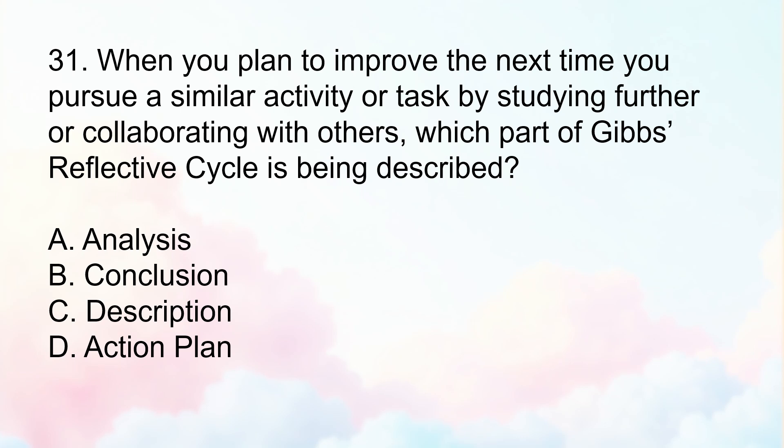Number 31: When you plan to improve the next time you pursue a similar activity or task by studying further or collaborating with others, which part of Gibbs' reflective cycle is being described? Letter A, analysis. Letter B, conclusion. Letter C, description. Or Letter D, action plan.